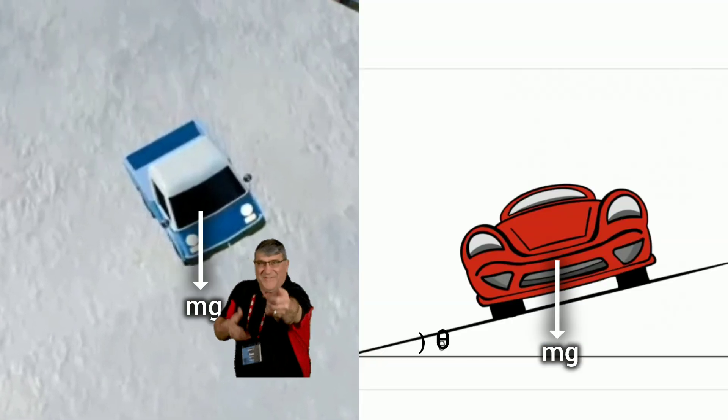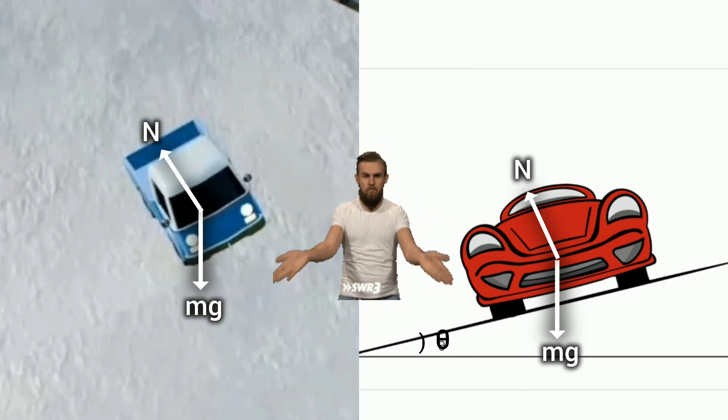The car's weight pulls it downward. The road's normal force pushes the car upward, but at an angle.